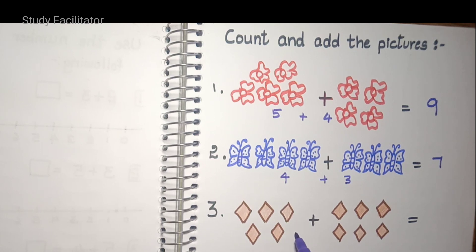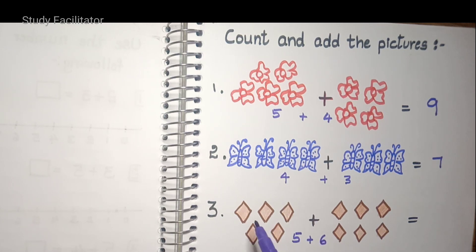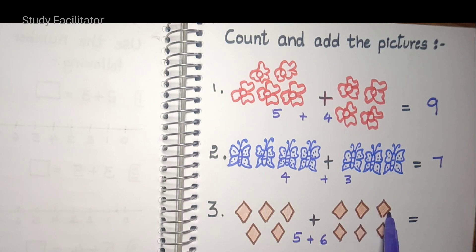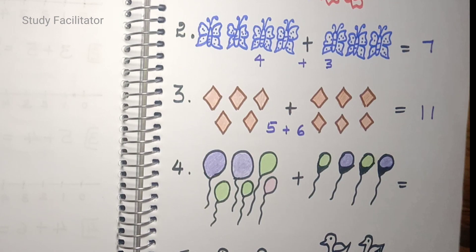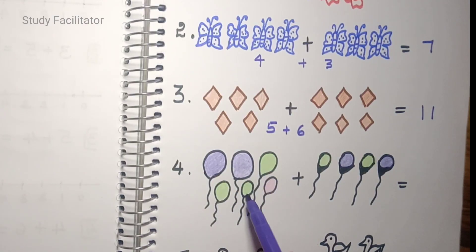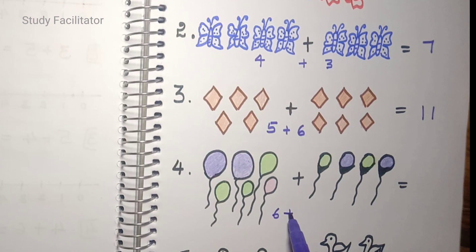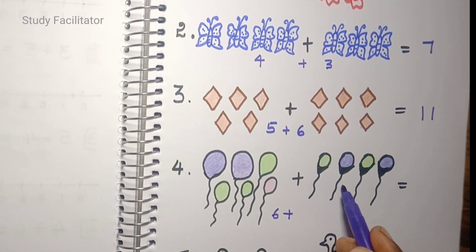Next, diamonds. One, two, three, four, five — five diamonds on one side. One, two, three, four, five, six — six on the other side. Totally: one, two, three, four, five, six, seven, eight, nine, ten, eleven — eleven diamonds in this picture. Next, balloons: one, two, three, four, five, six, plus one, two, three, four.